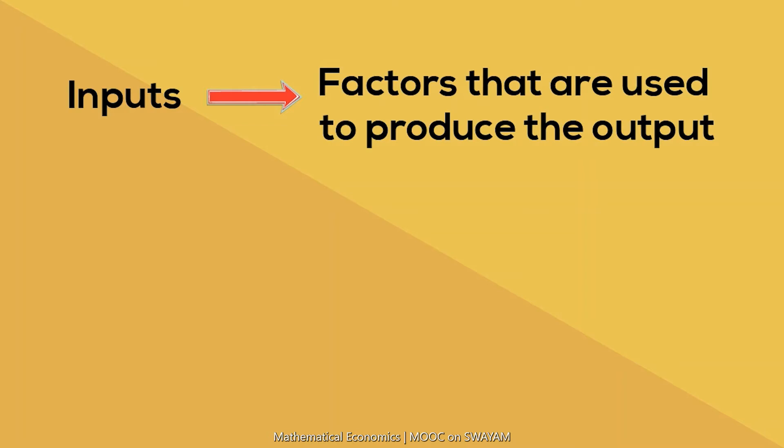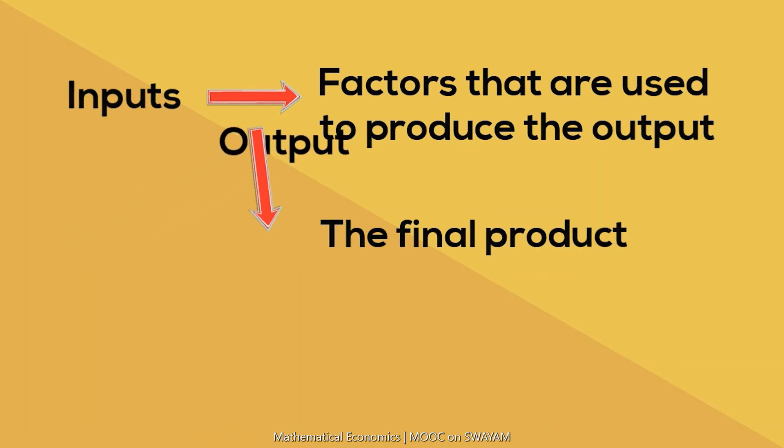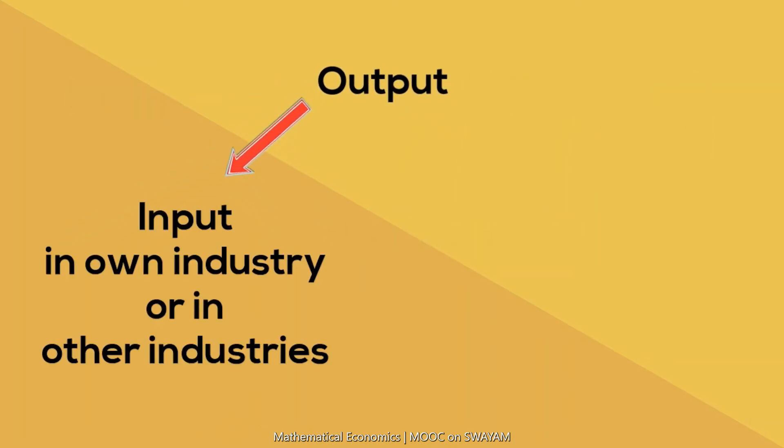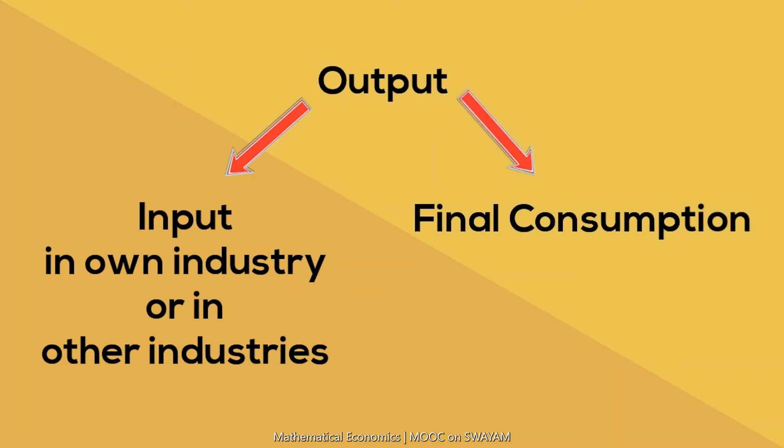Output is the product that has been processed and may be used for two major purposes. Number one, the output of one industry may be used as the input for other industries, and number two, the output may be sold to consumers and goes to the households for final consumption.